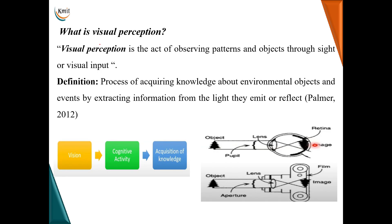Next, we will talk about a term called visual perception, because computer vision is related to visual perception. Visual perception can be defined as understanding the world through images and videos — or more formally, the science of perceiving and understanding the world through images and videos. It is also defined as the act of observing patterns and objects through sight or visual input. A scientist called Palmer in 2012 defined it as the process of acquiring knowledge about environmental objects and events by extracting information from the light they emit or reflect.